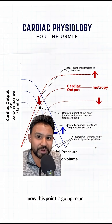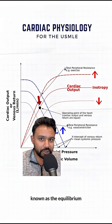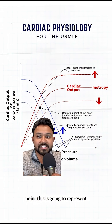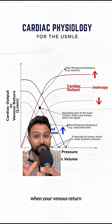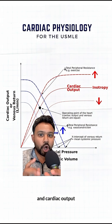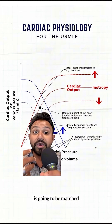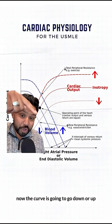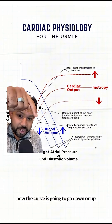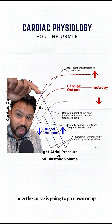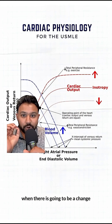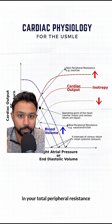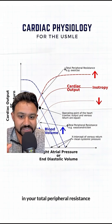This point is going to be known as the equilibrium point. This represents when your venous return and cardiac output are matched — think of it as what goes in must come out.